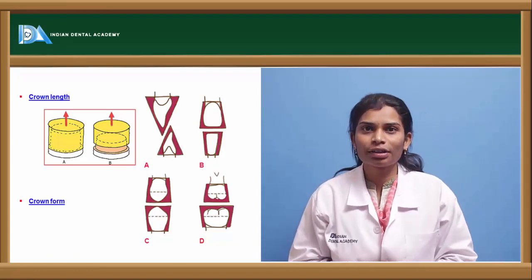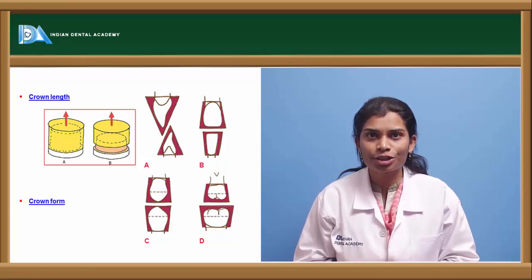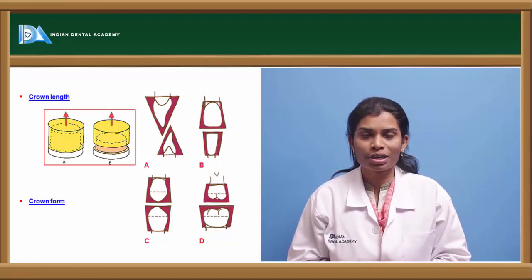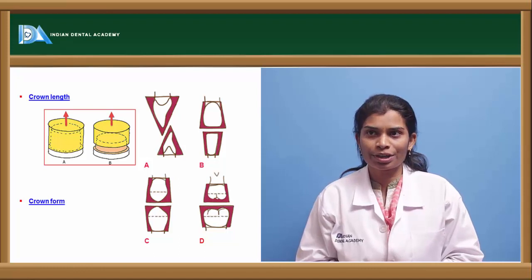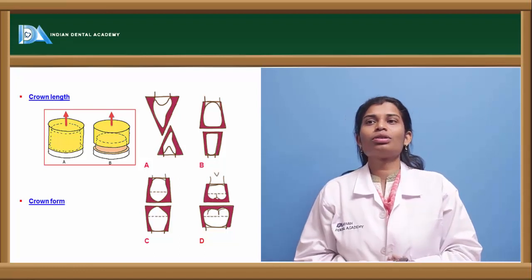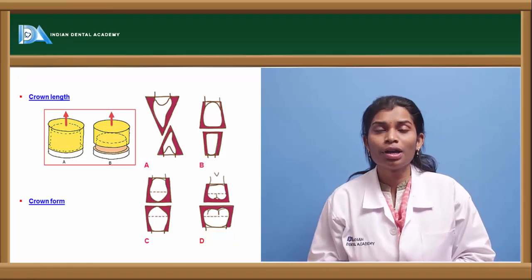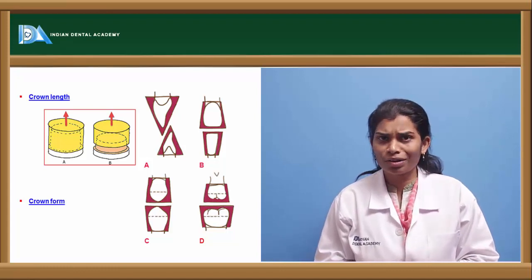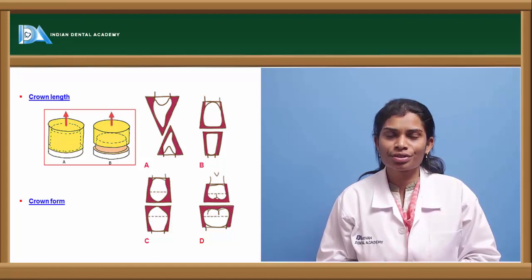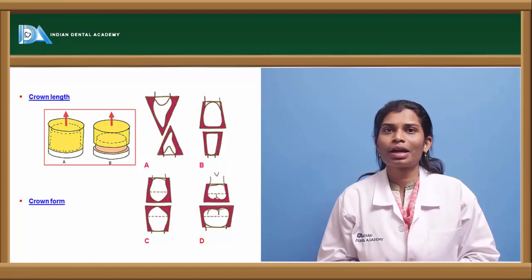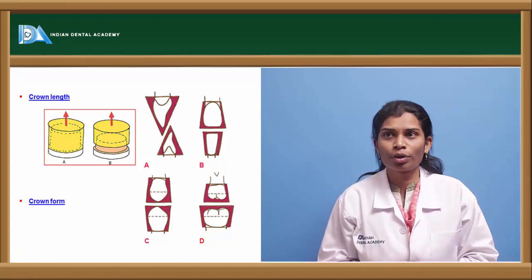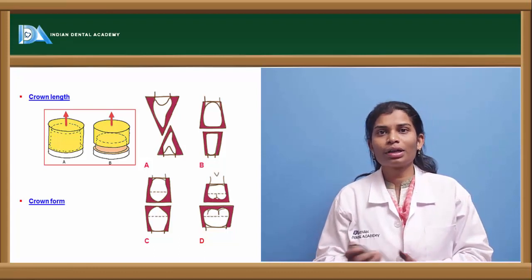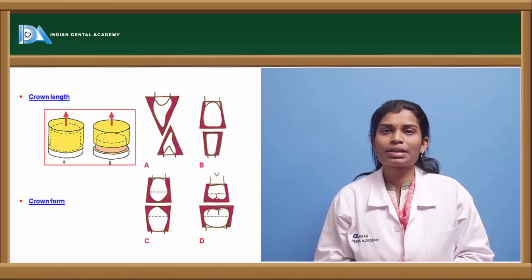Coming to the next factor — crown length. Crown length is very important in abutment selection. If the abutment is very short, such as a lower premolar which may be thin and short with flat proximal surfaces, the number of surfaces contacting the retainer will be very less. The more the crown length, the greater the bonding area with the retainer surface, leading to better abutment selection.